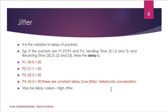A telephonic conversation is an example where low jitter may occur. High jitter may distract telephonic conversation. If the delay varies to a high range — for example, 20, 23, 26, 29 — the jitter delay is varying at a high rate, and this is called high jitter effect.